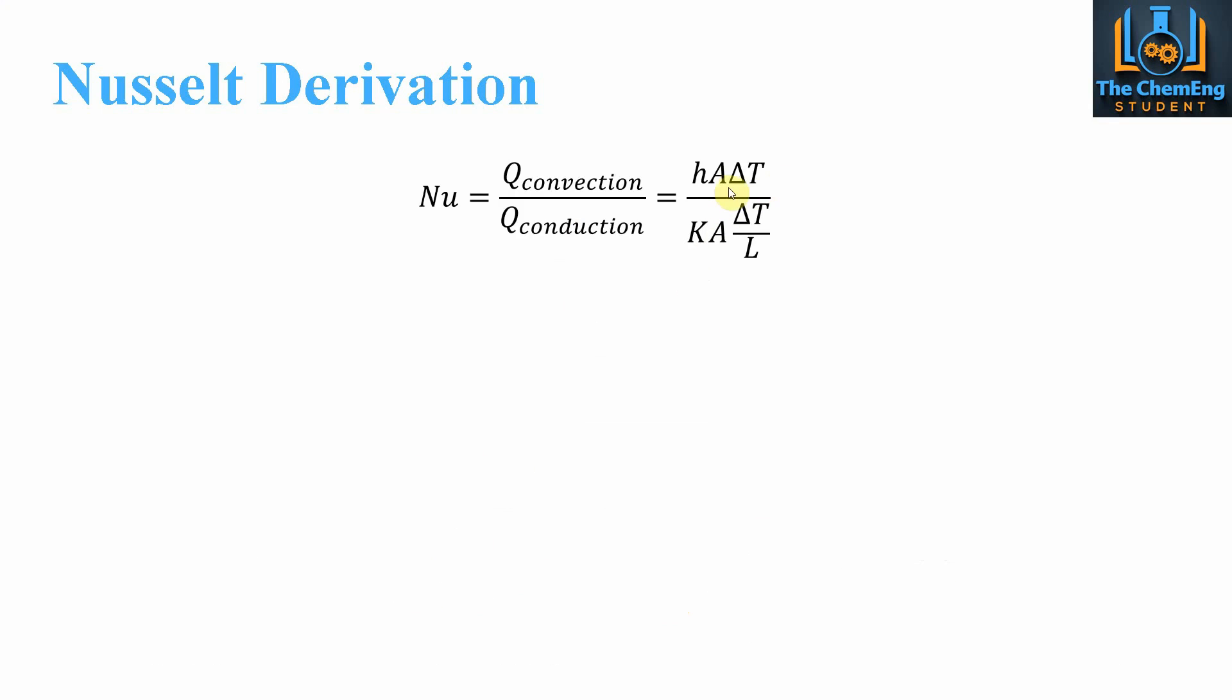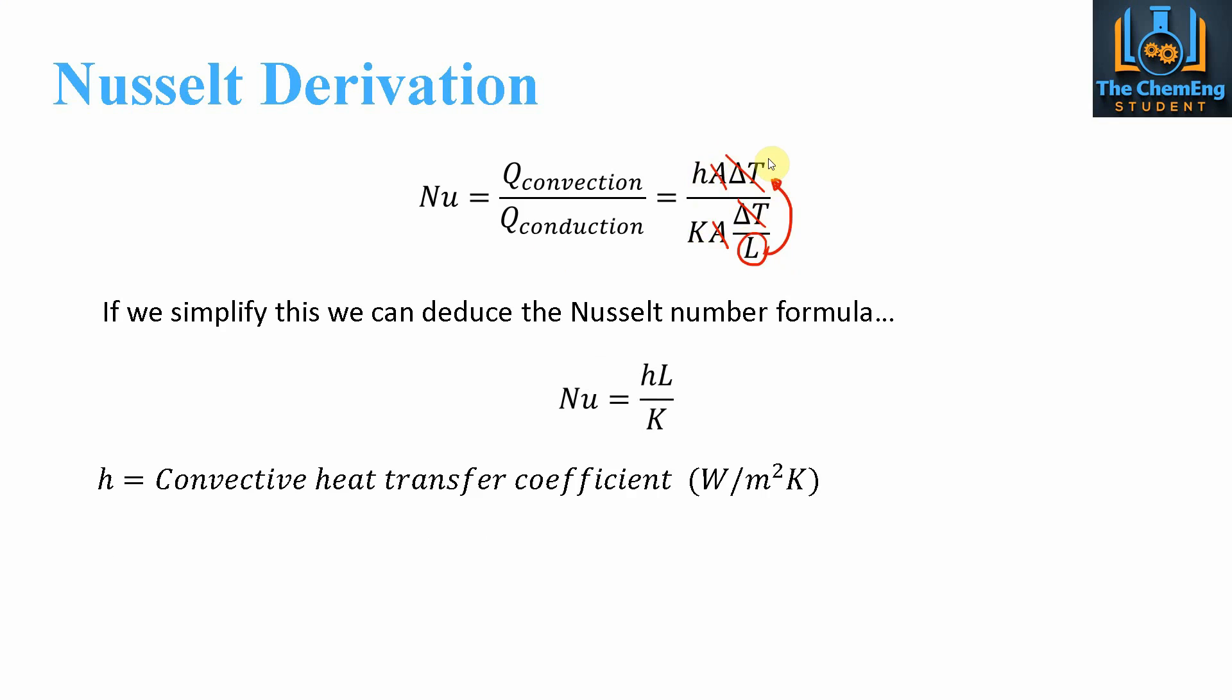So in doing so we can clearly see that our areas will cancel each other out, which tells us that Nusselt number isn't dependent on the size of the system. It doesn't matter how big the area is, Nusselt number will be the same. Likewise it doesn't account for a difference in the temperature, so our delta T's will cancel each other out. When we have a fraction divided by a fraction, this L will come up to the top and it will multiply the H. If we simplify this then we get our Nusselt value to be HL over K.